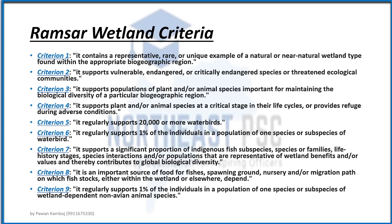There are 9 criteria in total. Among them is that the wetland should support more than 20,000 waterbirds, or that 1% of individuals of a particular species or subspecies of waterbirds depend on it. The wetland should also be an important source for fish food — serving as a spawning ground, nursery, or migration path where fish stocks survive or depend. If a site fulfills some or all of these 9 criteria, it is added to the Ramsar list.